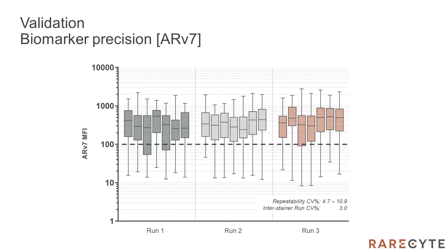Here we show precision measurements for our ARV-7 prostate assay. In this study, seven replicate 22RV1 samples were stained with the prostate assay on each of three stainer runs. Each box and whisker column represents the ARV-7 MFI distribution for a single sample. The percentage of ARV-7 positive cells is determined for each replicate with the threshold indicated by the dotted line. Using this approach, the repeatability coefficient of variation values ranged from 4.7 to 10.9% for the replicates within a run, while the inter-run intermediate precision across the three runs was 3%, demonstrating highly consistent detection of ARV-7 expression by CTCs with the prostate assay.